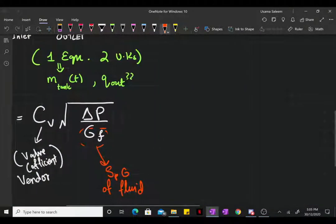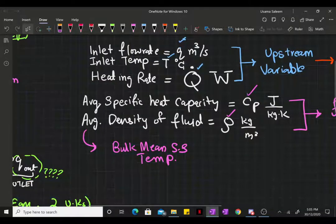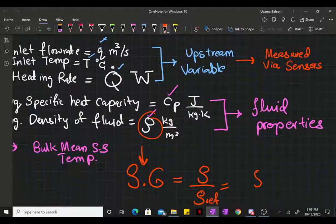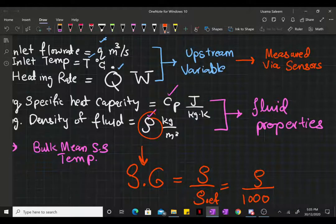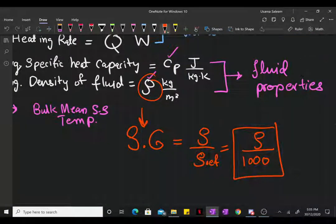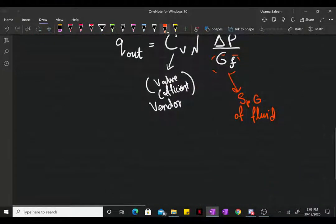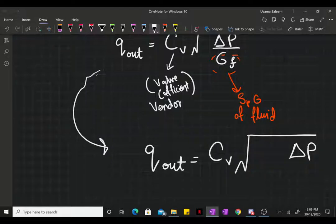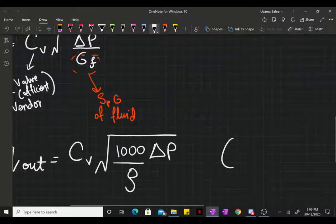We know the density of the fluid, right? So the specific gravity is just going to be density divided by the density of the reference fluid, which in this case is going to be water for most commercial valves. Given that, this valve equation turns out to be Q_out equals CV square root of (ΔP × 1000/ρ). Everything is in SI units.